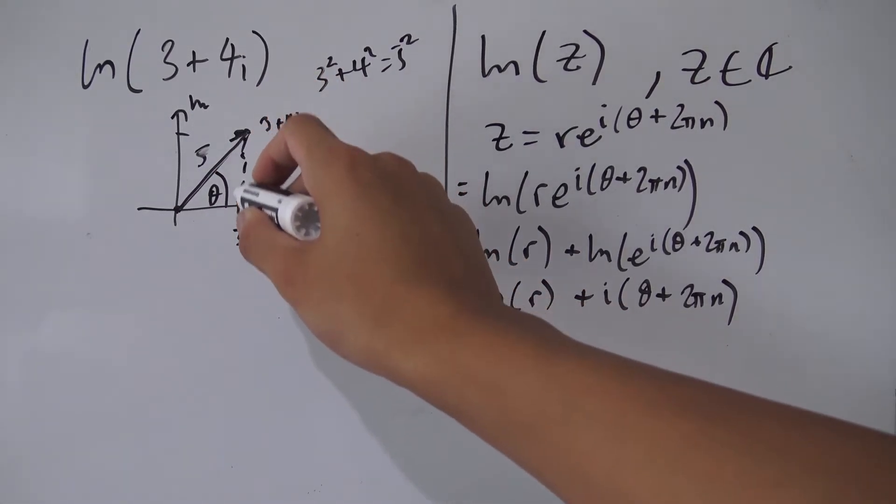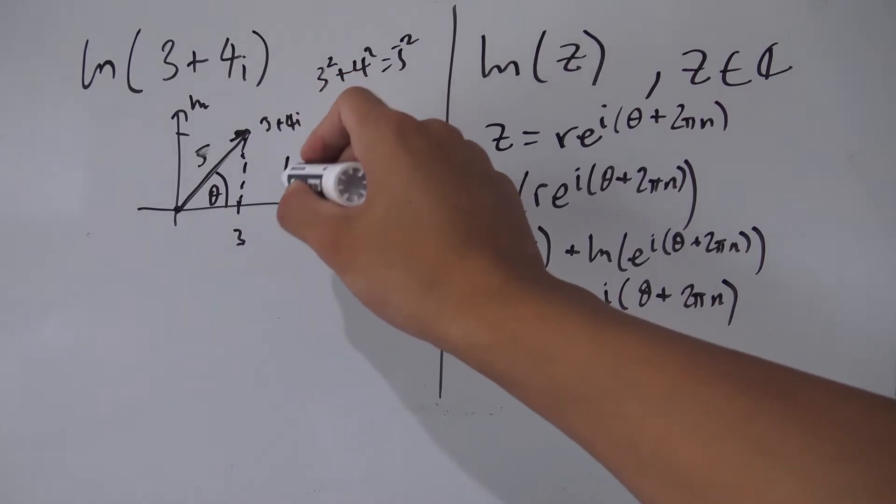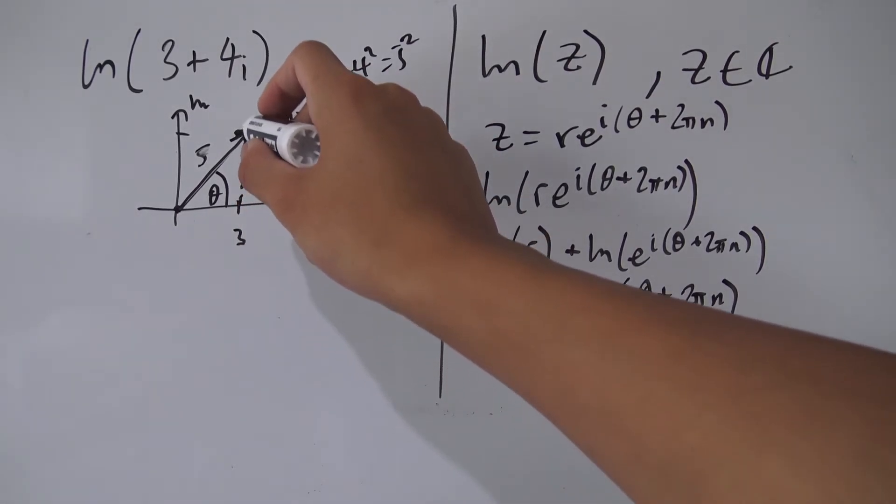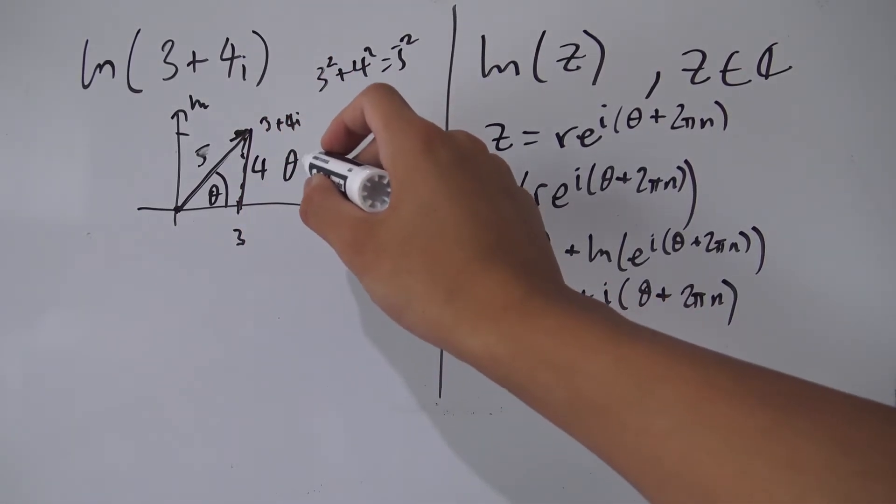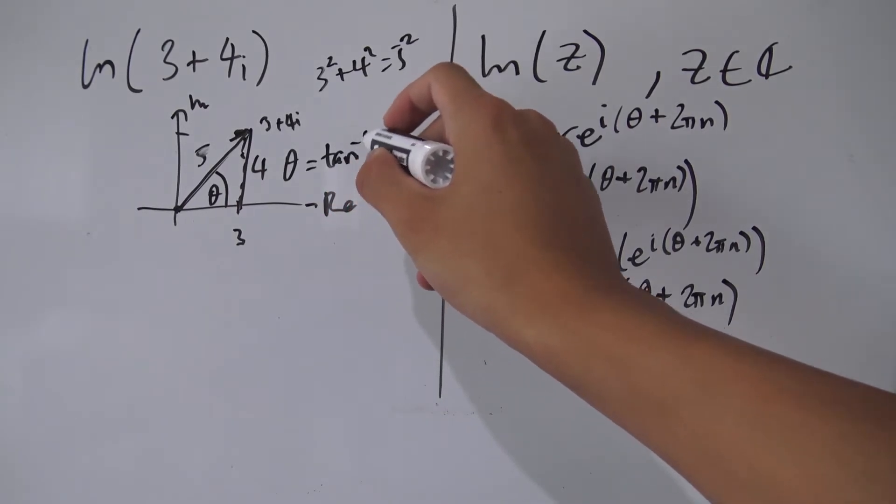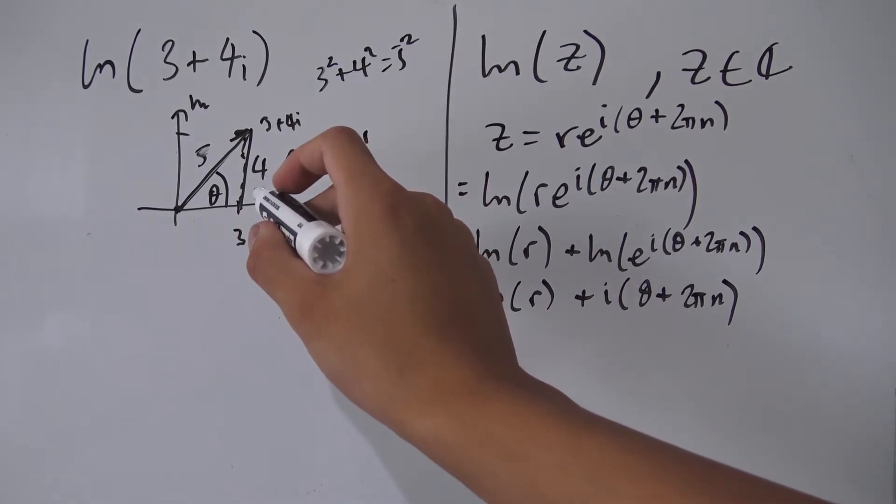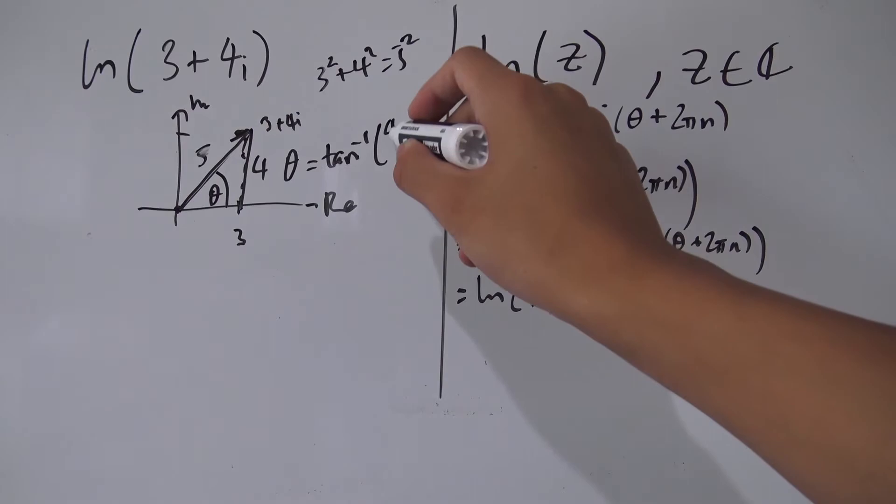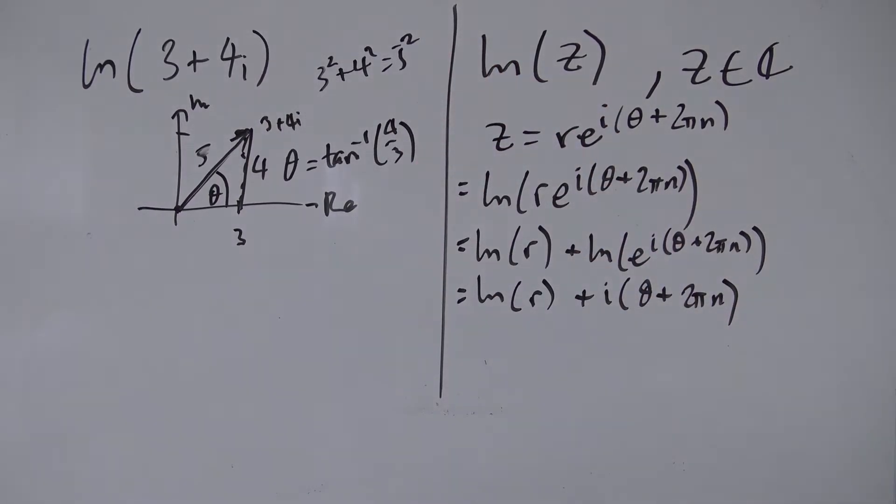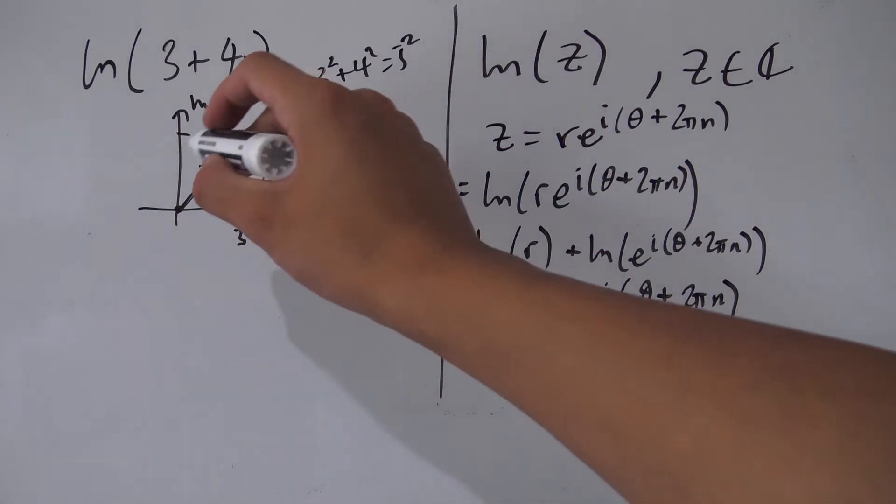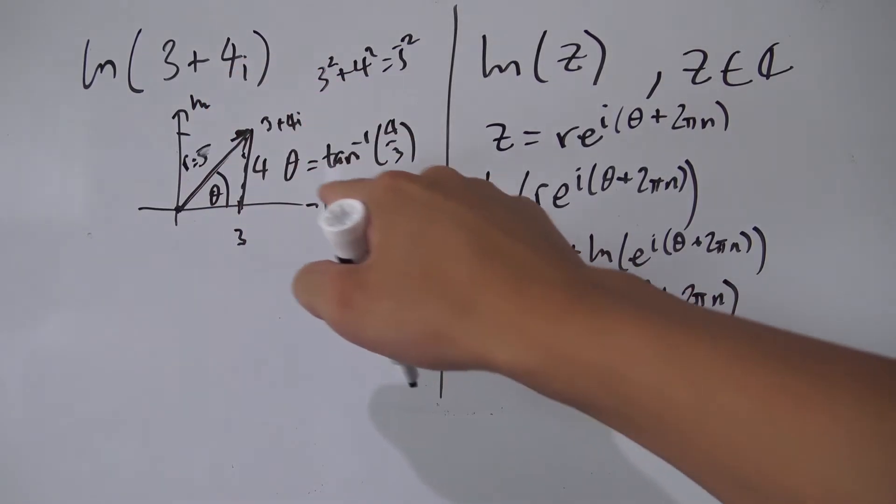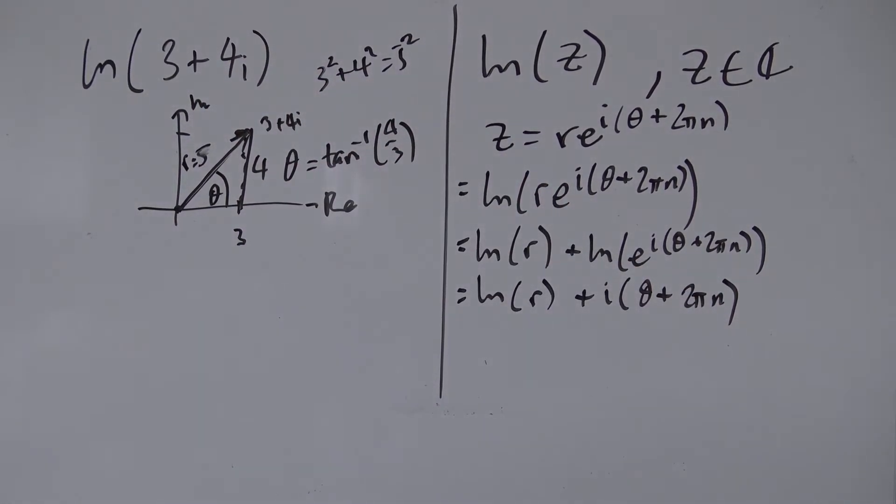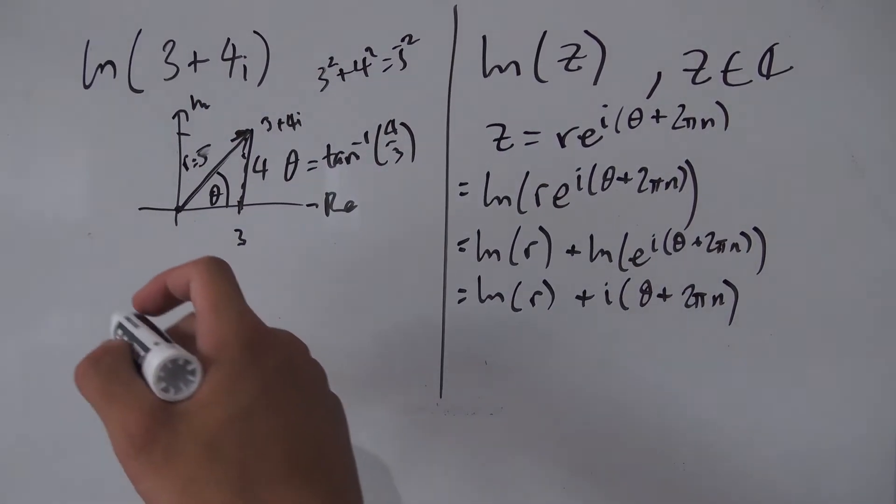And we have to find the angle here. Well that's just the arctangent of something. So theta, because we know this length here is 4, theta is nothing but arctangent of opposite over adjacent which is 4 over 3. So 4 thirds like so. So we have the information we need: our radius is 5, our theta is arctangent of 4 over 3.